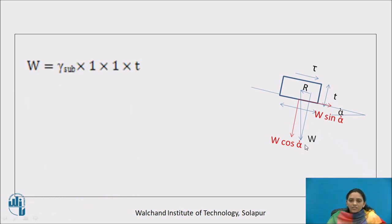Weight of the sediment is density into volume. Density is submerged density, and volume is, as we consider unit length and unit width and thickness t, so volume is 1 into 1 into t. So this is the weight of the sediment. Write in the form of density of water, W equals density of water into Gs minus 1 into 1 minus N into t.